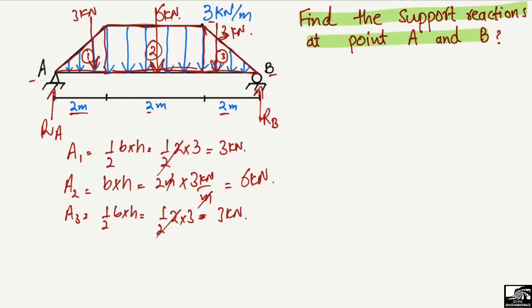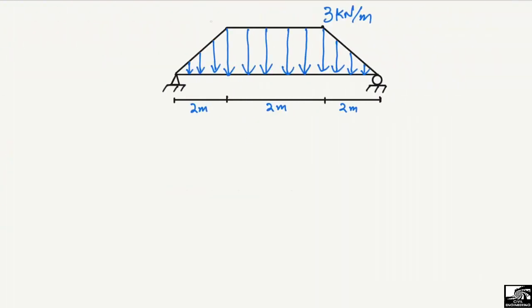So we have divided the trapezoidal load into three parts and found the equivalent load for each. To summarize: the first load is 3 kilonewtons, the second load is 6 kilonewtons, and the third load is 3 kilonewtons. Now we need to find the moment of each load about the supports.